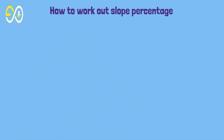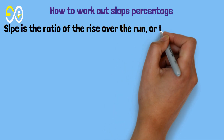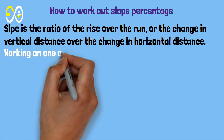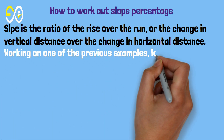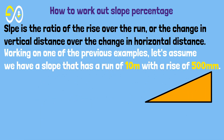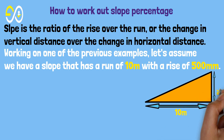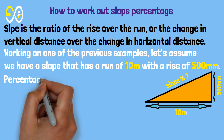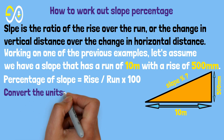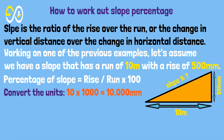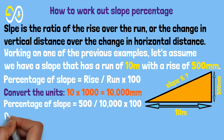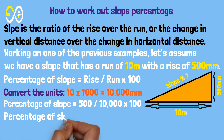How to work out slope percentage. Slope is the ratio of the rise over the run, or the change in vertical distance over the change in horizontal distance. Working on one of the previous examples, let's assume we have a slope with a run of 10 meters and a rise of 500 millimeters. Percentage of slope equals rise over run times 100. Convert the units: 10 times 1000 equals 10,000 millimeters. Percentage of slope equals 500 over 10,000 times 100. Percentage of slope equals 5%.